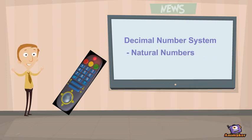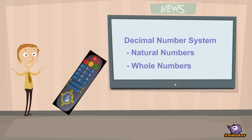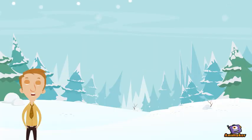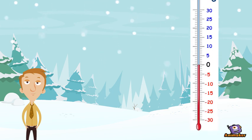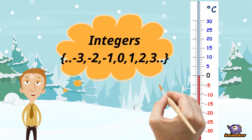If we include zero to our natural numbers, they are called as whole numbers. To represent very cold temperatures, our whole numbers are not sufficient. If we include negative numbers to our whole numbers, they are called as integers.